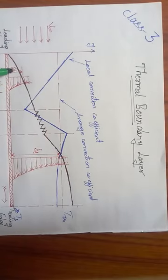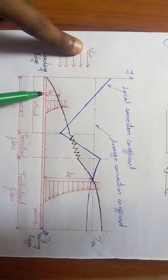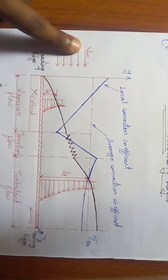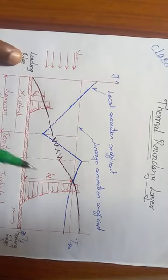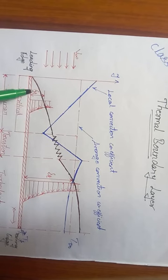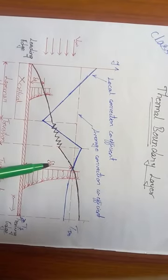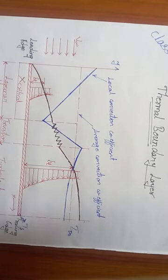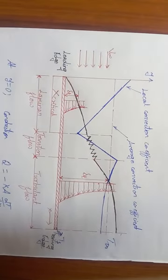Within the thermal boundary layer up to thickness delta_t, dt/dy is noticeable—having a sufficient measurable value. After delta_t, there is no noticeable change in the temperature gradient.